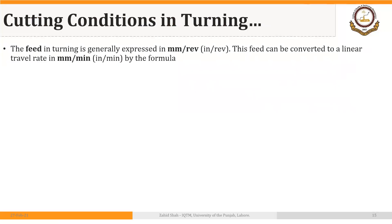The feed in turning is generally expressed in millimeters per revolution or inches per revolution. This feed can be converted to a linear travel rate in millimeters per minute or inches per minute using the formula: feed rate equals RPM multiplied by feed — that is, revolutions per minute multiplied by inches per revolution, giving inches per minute.